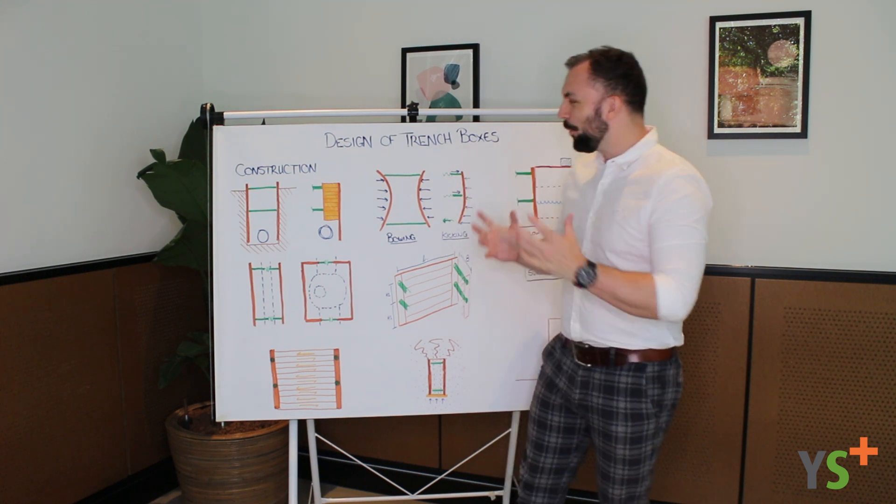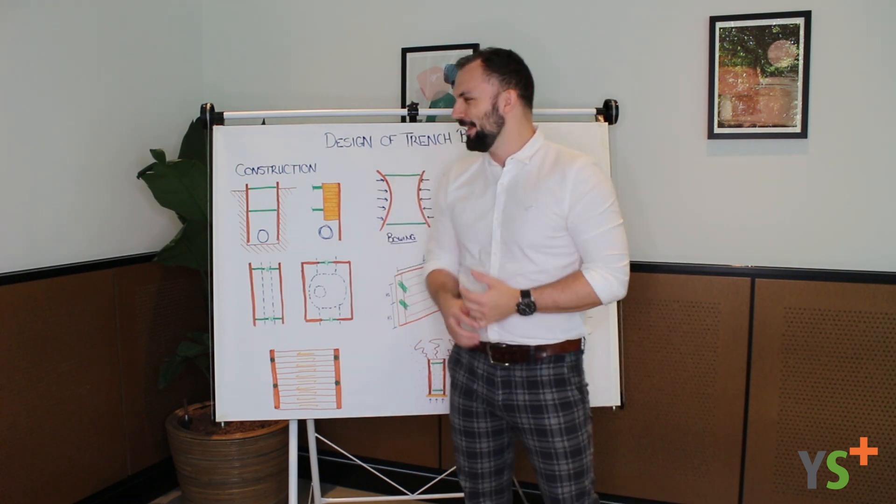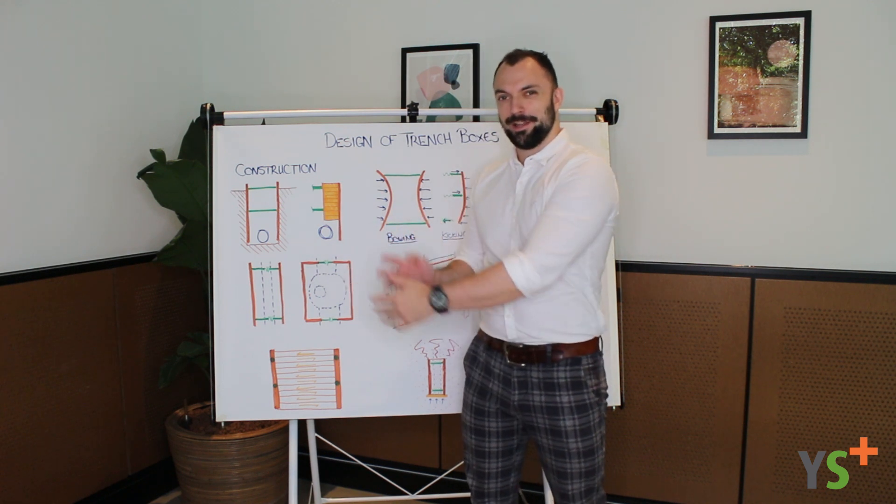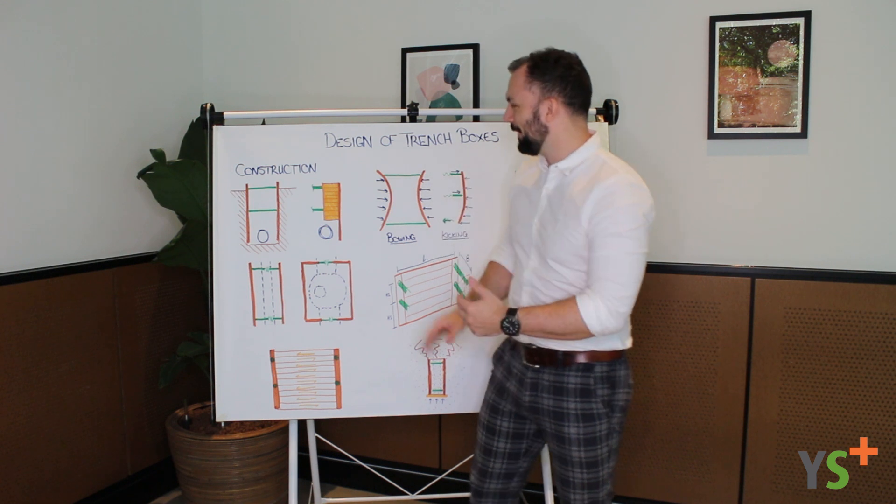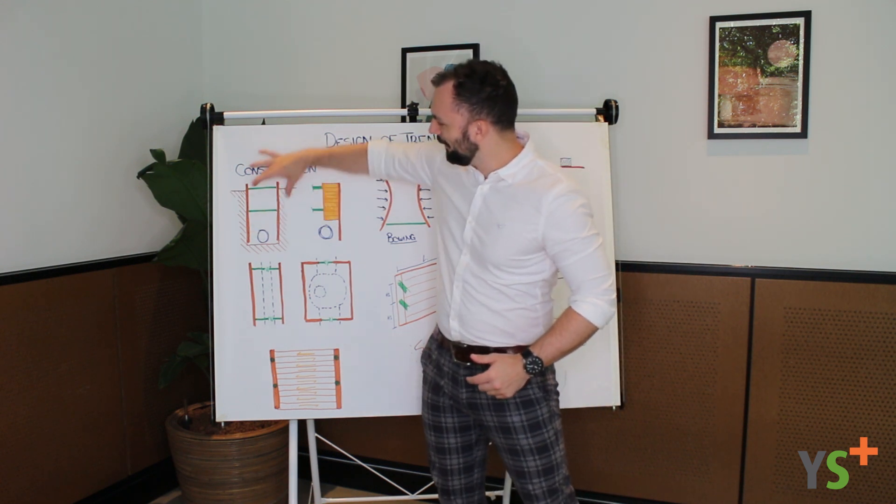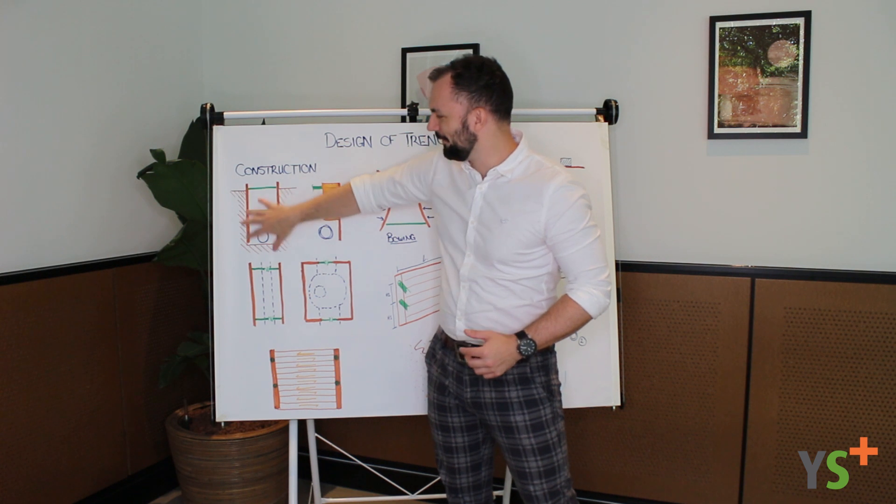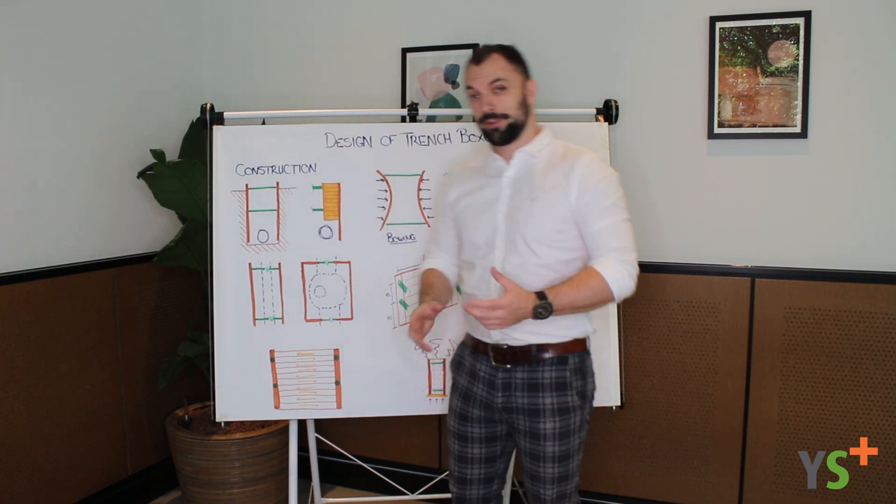Now what is a trench box? Put in its simplest form, it is a big plate of metal that goes inside a hole that stops the ground from caving in on you. In fact, it tends to be two big sheets separated by some struts to give you a bit of space inside to work.